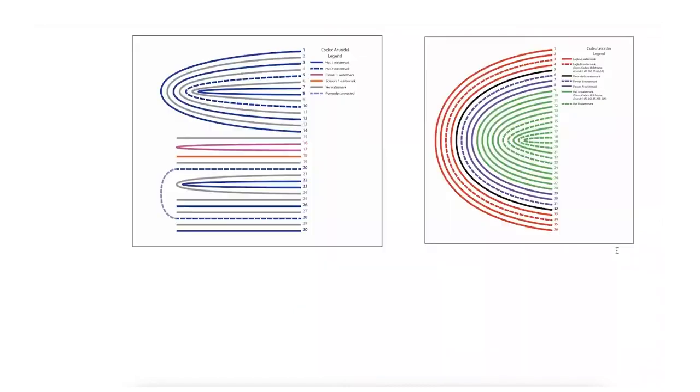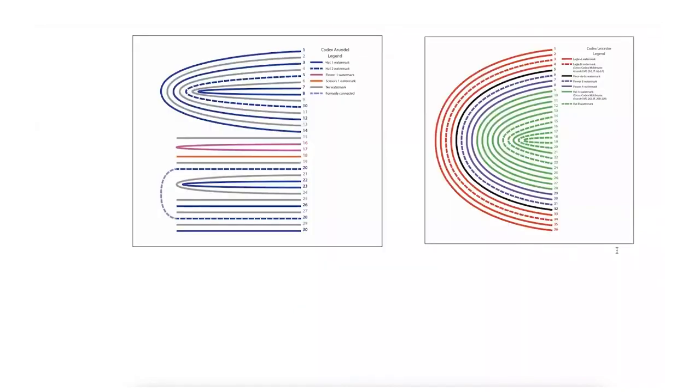And then using all this information, you can build what's called a collation diagram. And this is for the Arendelle. This is for the Lester codex. And these are how the pages are aligned. So that's really what I wanted to say.